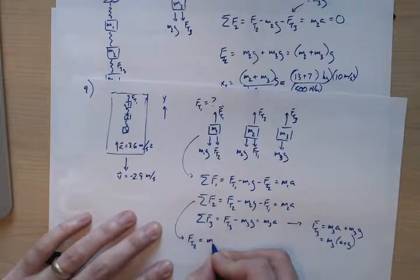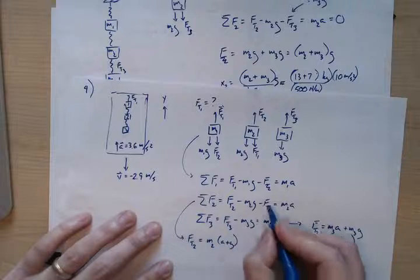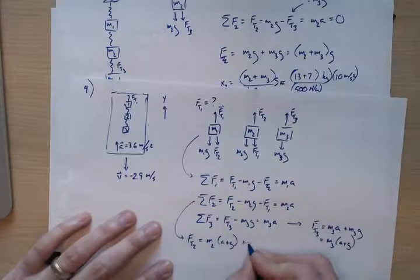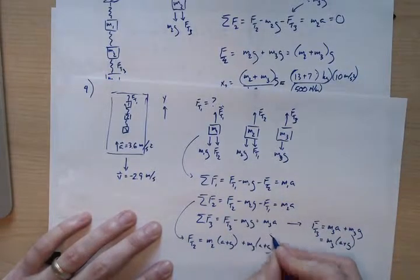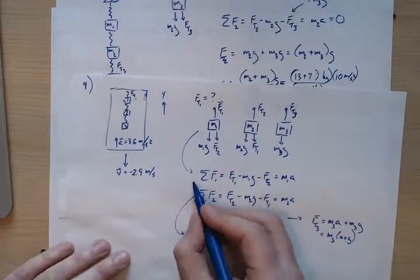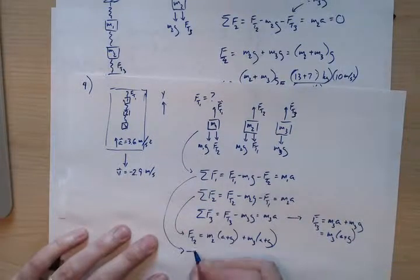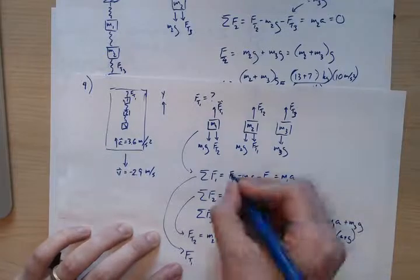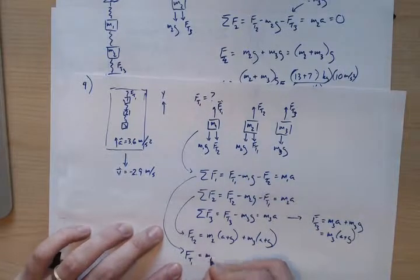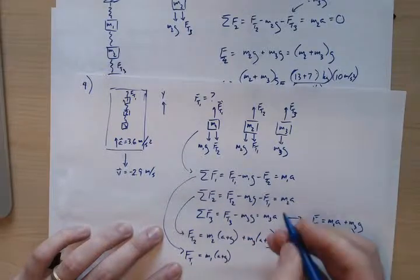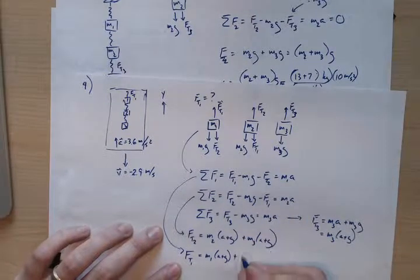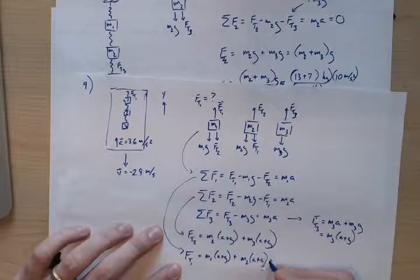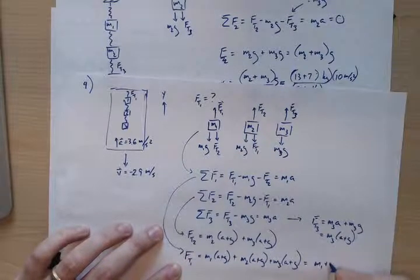Plugging into the equation for mass two: ft2 equals m2(a plus g) plus ft3, which is m2(a plus g) plus m3(a plus g). You can see a pattern forming. Now for the top spring, ft1 equals m1(a plus g) plus ft2, giving m1(a plus g) plus m2(a plus g) plus m3(a plus g), which equals (m1 plus m2 plus m3) times (a plus g).